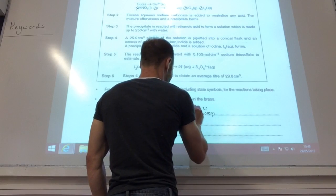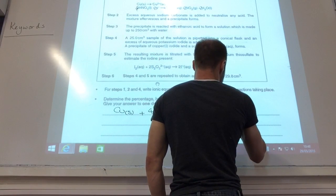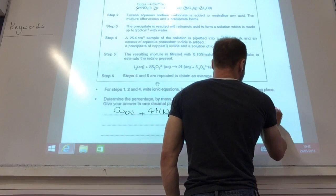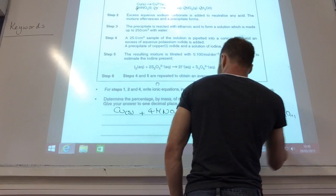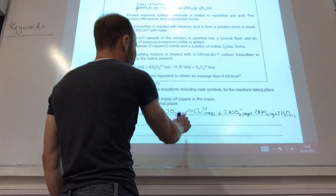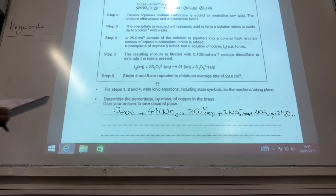Cu plus 4HNO3 is going to go to copper two plus aqueous, plus 2NO3- aqueous, plus 2NO2 gas, plus 2H2O liquid, and HNO3 is a liquid. So that's that one sorted. Not too bad. Yep, that looks good.